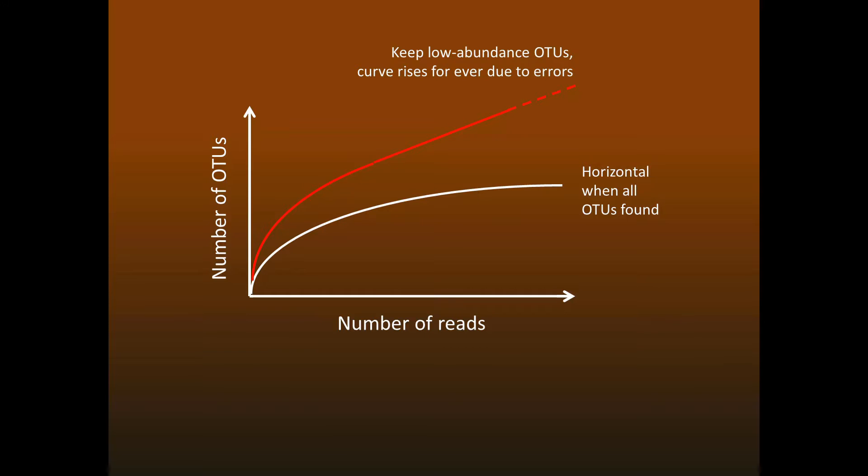If we keep the low-abundance sequences, then the measured diversity will continue to increase because of errors, regardless of how many reads we make. On the other hand, if we discard low-abundance sequences to keep the number of bad OTUs at a reasonable level, then the curve always appears to flatten out. There's no middle ground between these two choices, because it's impossible to reliably detect the bad sequences. And this means that rarefaction analysis cannot tell you anything useful about your 16S data.